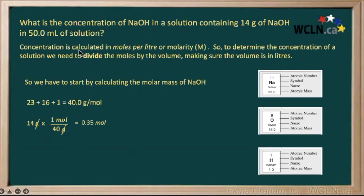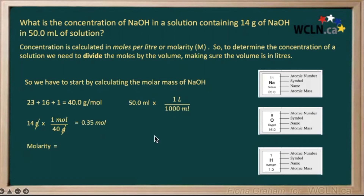Now we need to look at our volume, and it's 50 milliliters. Be careful here — it has to be in liters. So to calculate our molarity, we're going to convert our 50 milliliters to liters using this conversion factor: one liter is 1,000 milliliters, writing it so that our units would cross out and our final units would be in liters. So 50 divided by 1,000 gives us 0.05 liters.